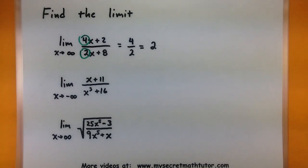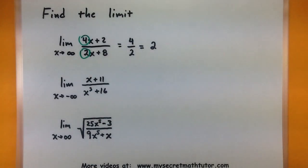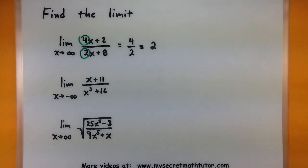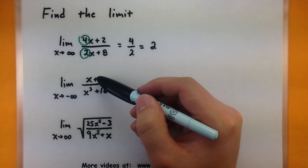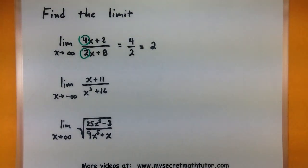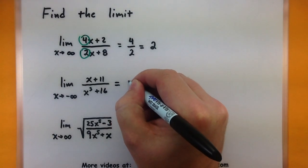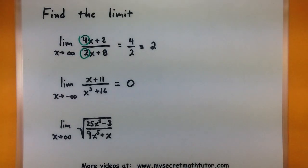The next one is approaching negative infinity. A lot of people worry that the values going negative changes things, but no — you're still just looking for the largest power on top and bottom and comparing them. Here we have x plus 11 all over x cubed plus 16. The largest power is on the bottom, so the limit of this one is 0. Done just like that.